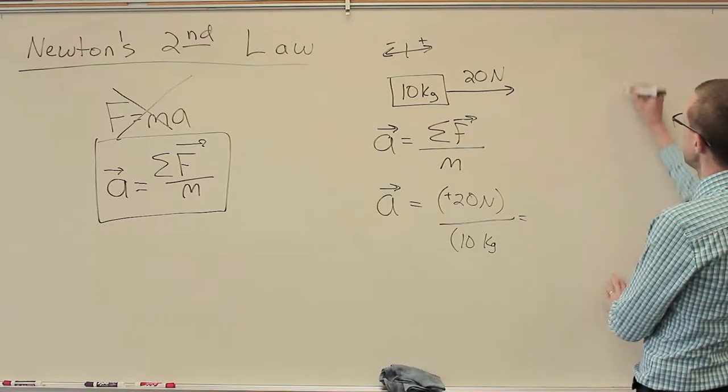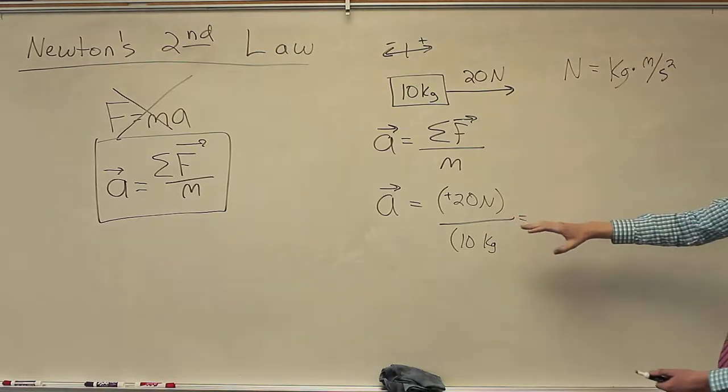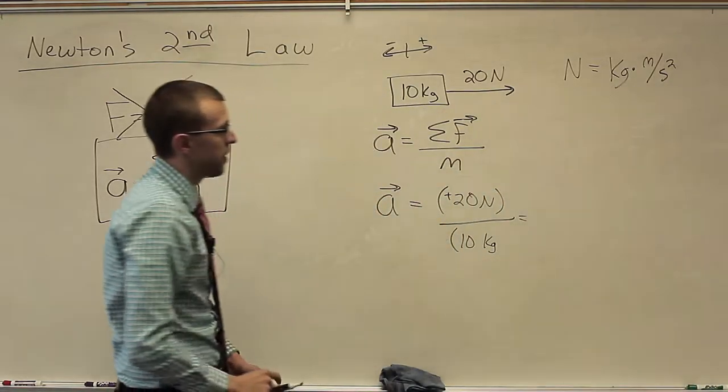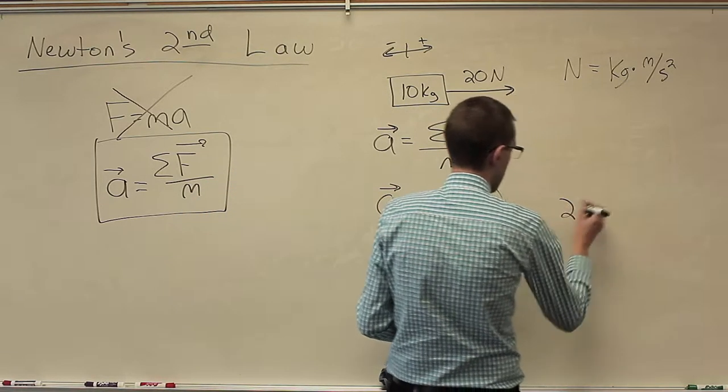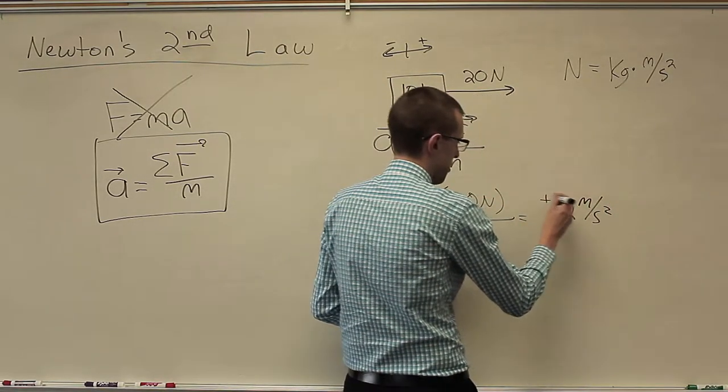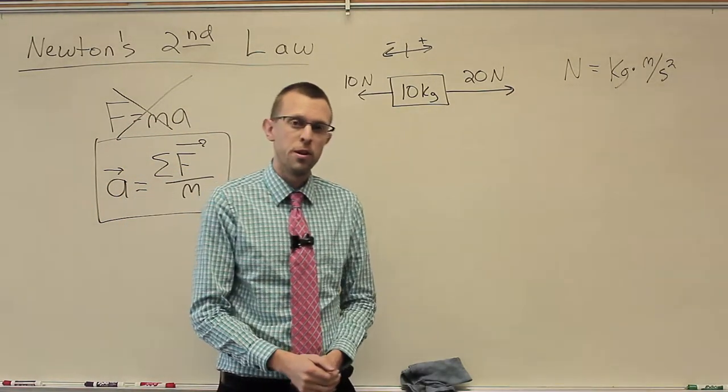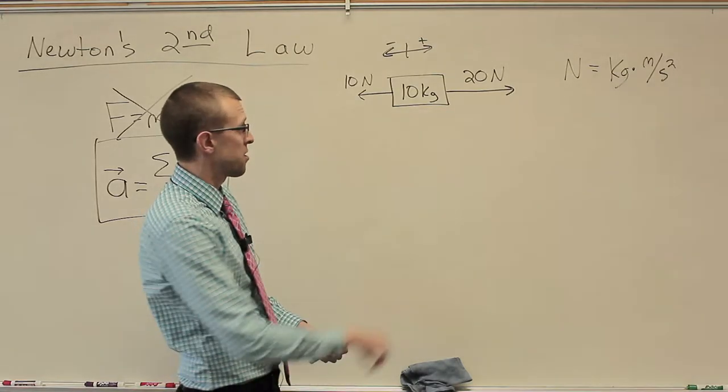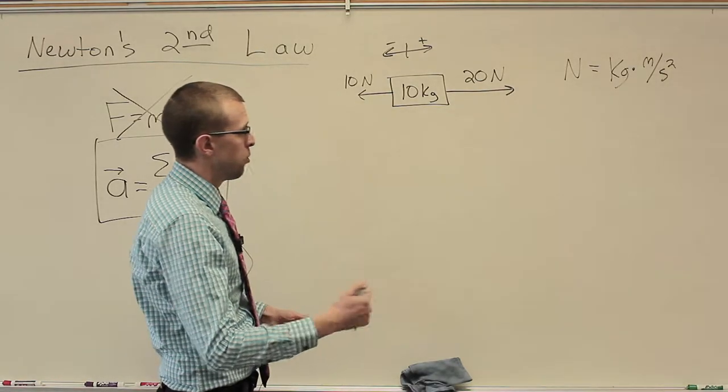Now Newtons per kilogram is sort of an odd unit. So it's worth noting here, worth remembering that Newtons are really just a shorter way to write the true units for force, or the base units for force, which would be kilograms times meters per second squared. That's the same as a Newton. So I'll have kilogram meters per second squared divided by kilograms, and that'll give me just meters per second squared for my units. 20 divided by 10 is 2 meters per second squared, and that's a positive sign there, so that's in the positive direction, or 2 meters per second squared to the right.